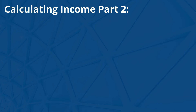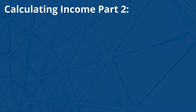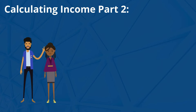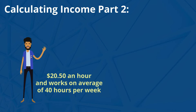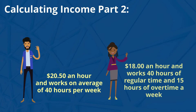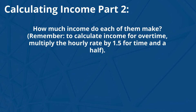Now that we've discussed the multiple ways to calculate income, let's go over a few examples. Asad and Jasmine are looking to purchase their first home. Asad makes $20.50 an hour and works an average of 40 hours per week. Jasmine makes $18 an hour and works 40 hours of regular time and 15 hours of overtime per week. How much income do each of them make?